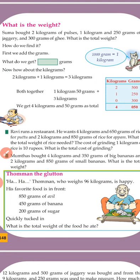Suma bought 2 kg of pulses, 1 kg and 250 g of jaggery, and 300 g of ghee. What is the total weight?